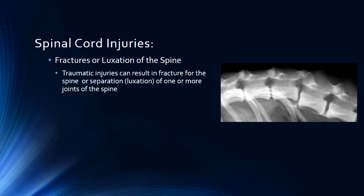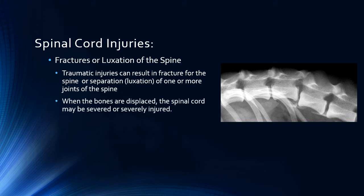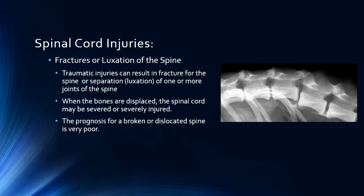Damage to the bones of the spine generally occurs from trauma — this can be from falling, being hit by a car, or getting into a fight with another animal. Fracture of a vertebra or partial or full dislocation of one of the vertebral joints invariably traumatizes the spine. If the spine is broken and dislocates, the spinal cord may be severed or severely injured. These type of traumatic lesions have to be addressed surgically, and the prognosis is generally guarded to grave.